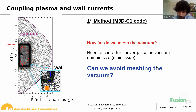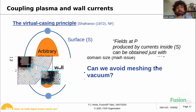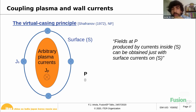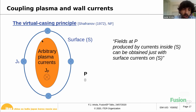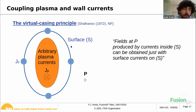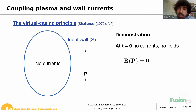Can we find a technique in which we don't have to mesh the vacuum? The answer is yes. This other technique is based on the virtual casing principle, which is a very old principle — already Shafranov in 1972 used it for his calculations. It states that if you have a point P far away from arbitrary plasma currents, the field produced by these currents at P can be obtained just by surface currents on a surface S which encloses these plasma currents.